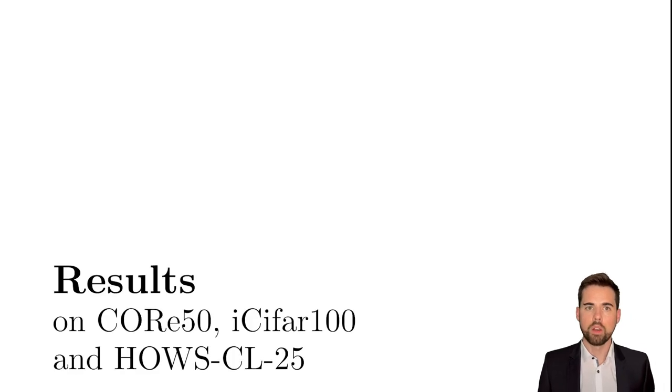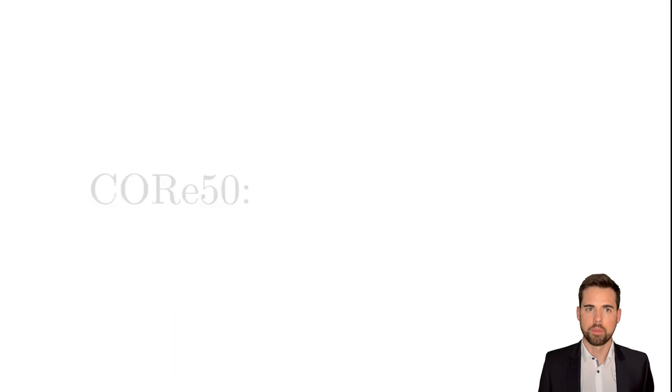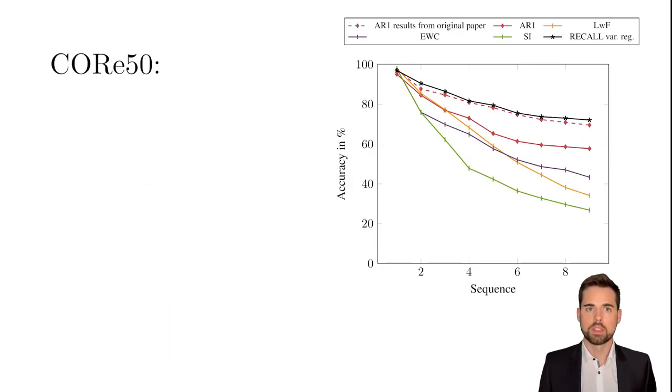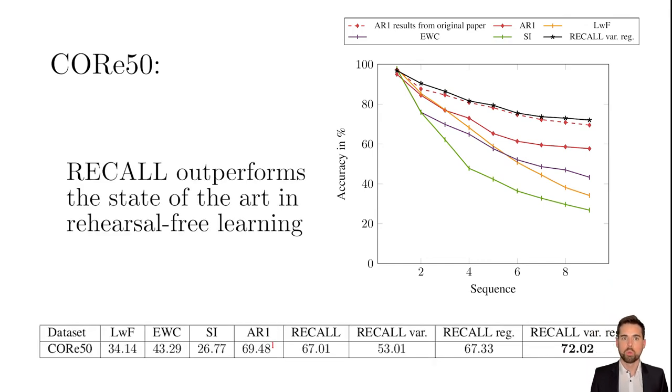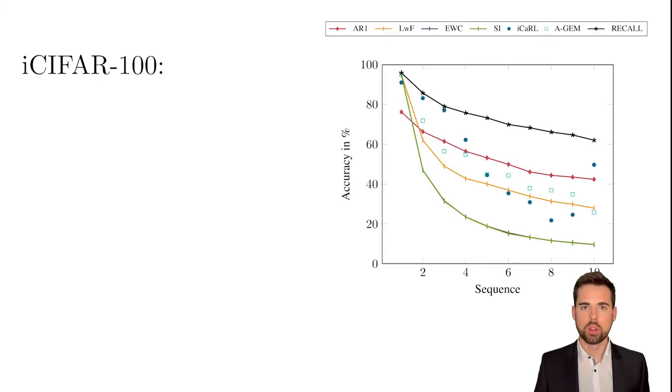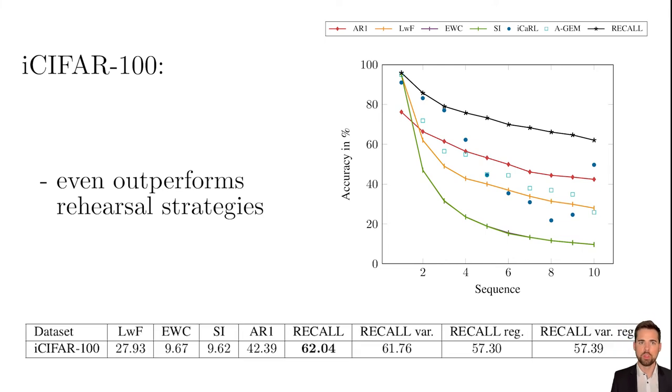We evaluate our approach on different datasets. First, on Core50, which is a widely used dataset in continual learning. Our approach, depicted in black, outperforms AR1, which is, to our knowledge, state-of-the-art in rehearsal-free continual learning on this dataset. On iCypher, we even outperformed some rehearsal strategies shown in blue dots and squares, which have access to data examples from previous sequences.